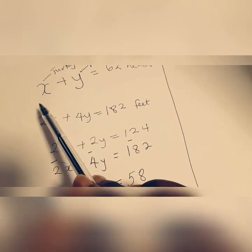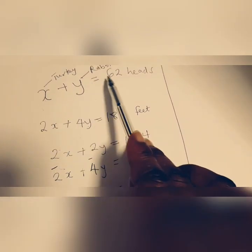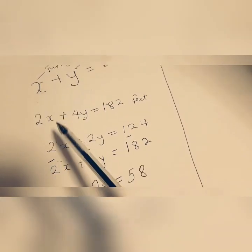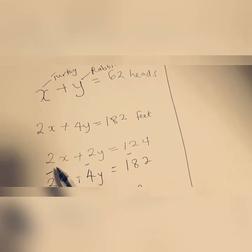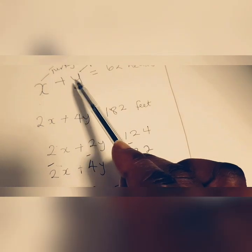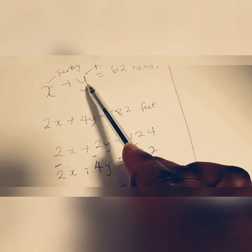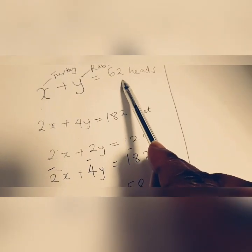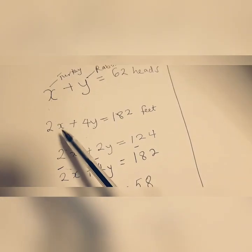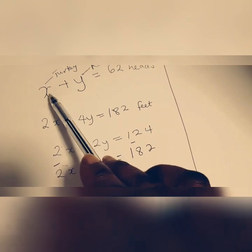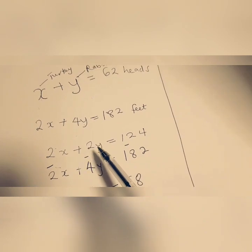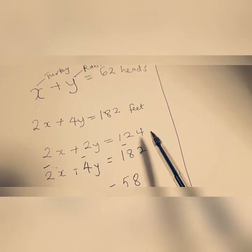Now the reason why you have to multiply this equation by 2 is just because you want the variable x to have the same coefficient in this case. But like I said you could decide to have this y as a 4y and in that case it will mean you're multiplying by 4 as well. So now this top equation becomes 2x plus 2y equals 124.